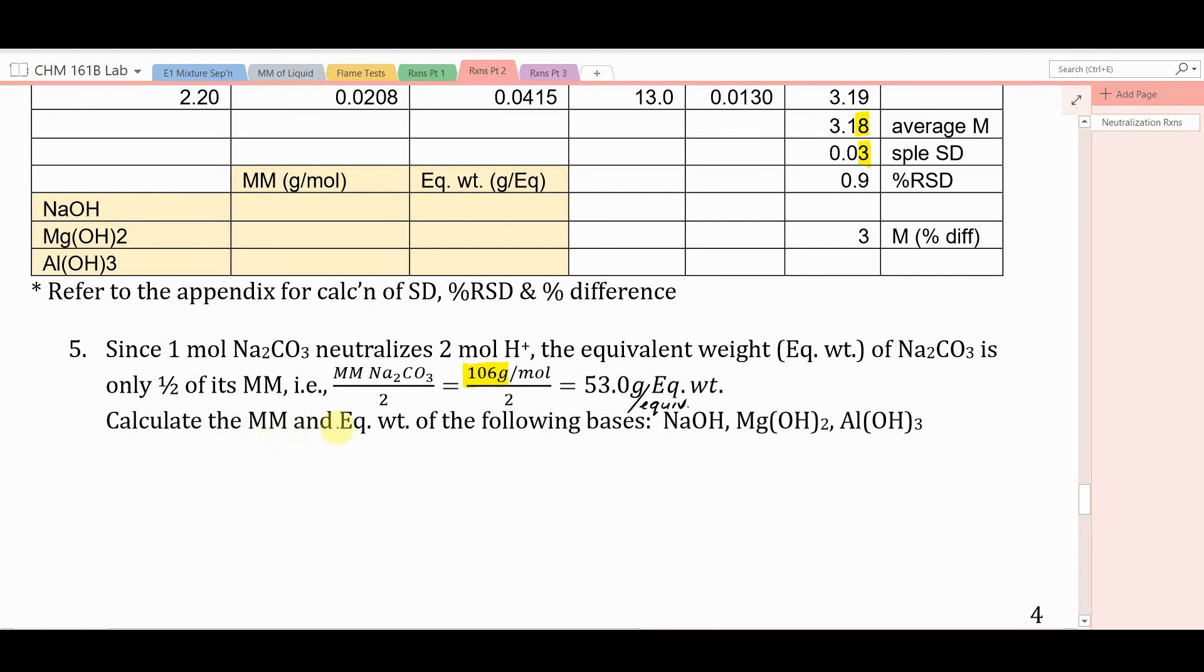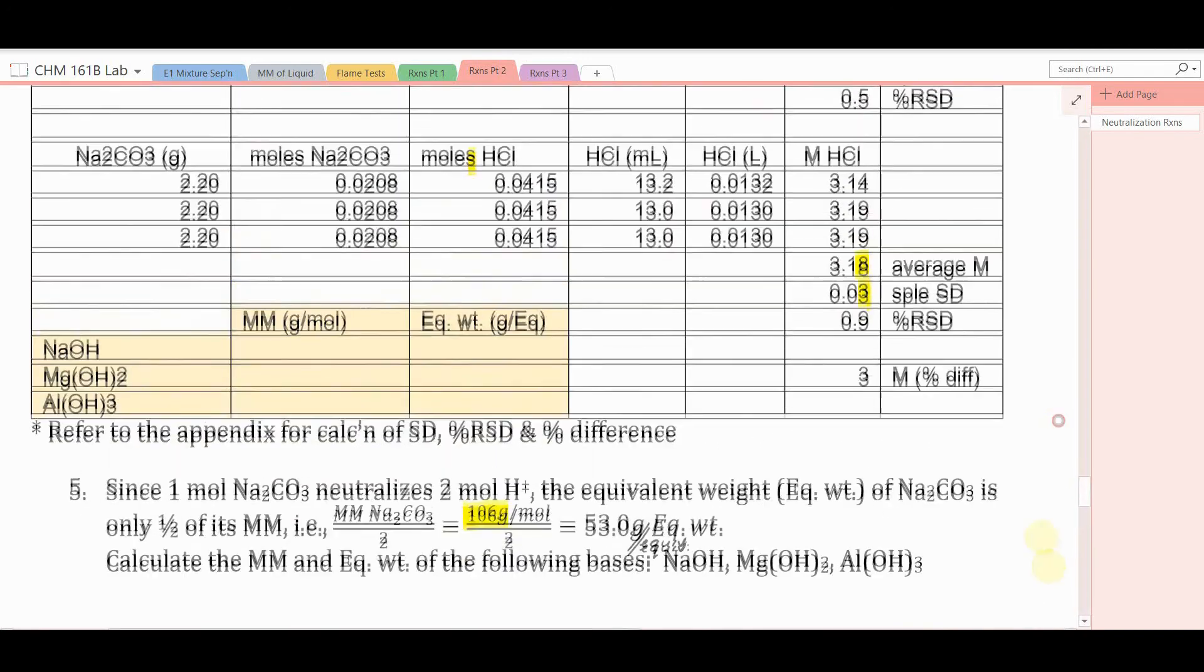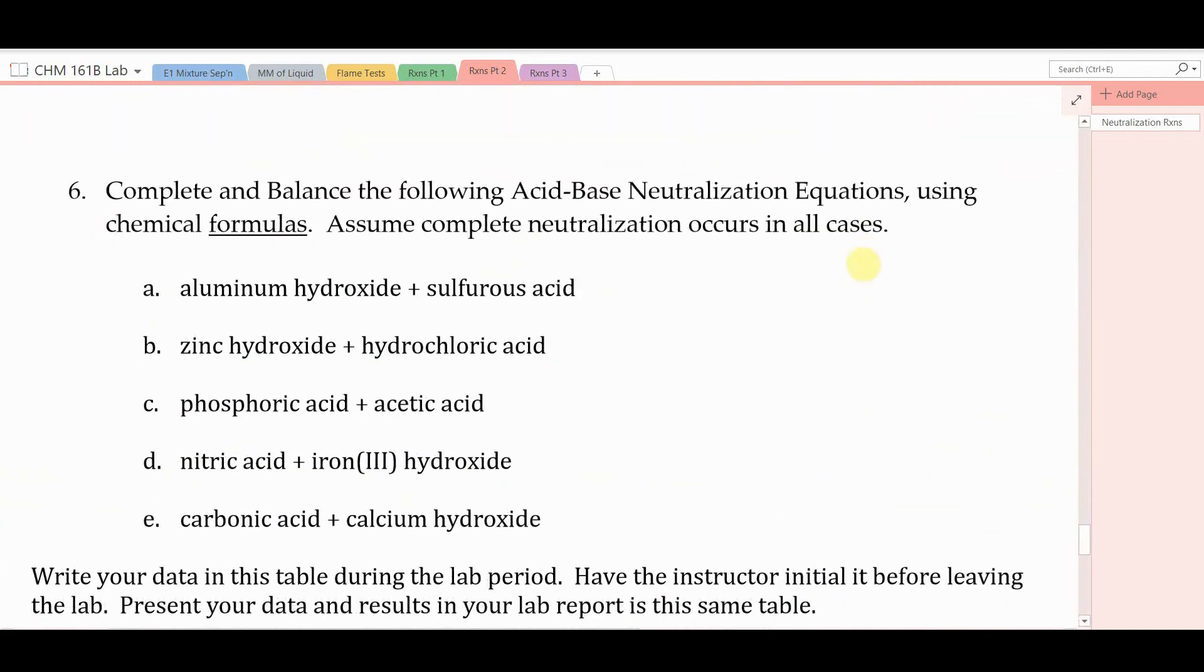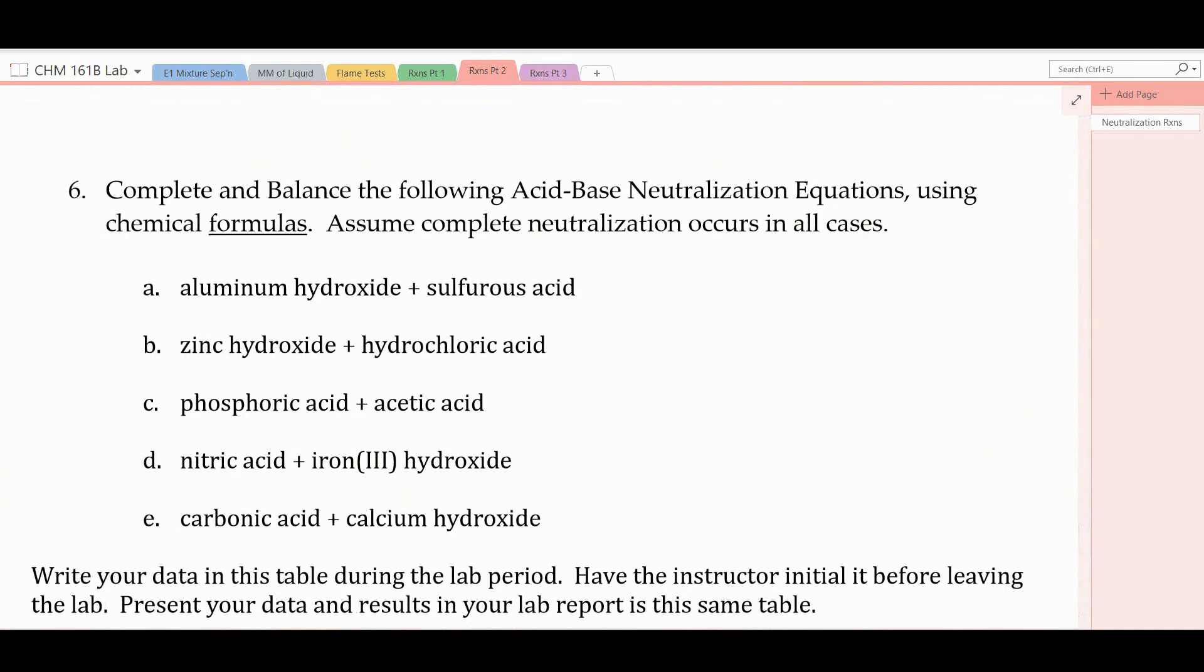Calculate the molar mass and equivalent weight of the following bases. Sodium hydroxide, monobasic, magnesium hydroxide, dibasic, aluminum hydroxide, tribasic. And you can complete that right in this section of the table. On the next page, you are asked to complete and balance the following acid-based neutralization equations using chemical formulas, not words. Assume complete neutralization occurs in all cases.